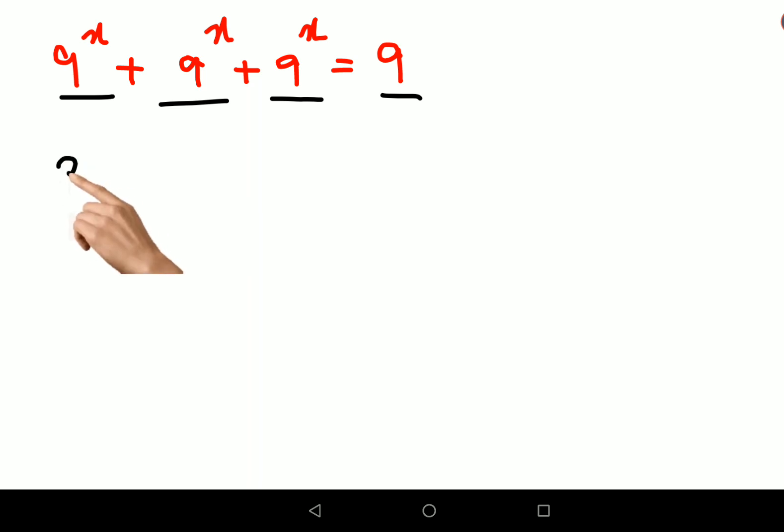three nines. We can just take 9 raised to x common, and then we have 1 plus 1 plus 1 equals to 9. So this...